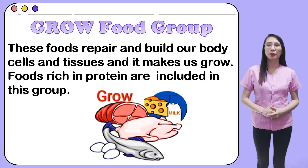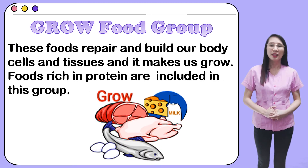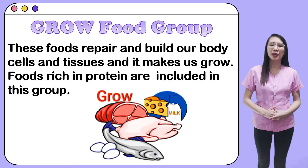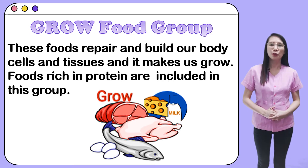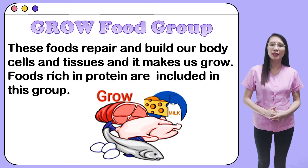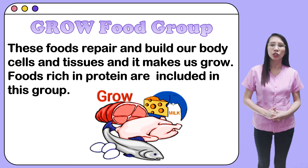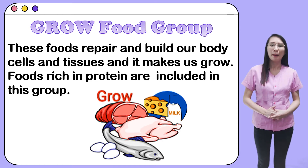The second food group is the GROW Foods. These foods repair and build our body cells and tissues and make us grow. Foods rich in protein are included in this group. Some examples are poultry foods, meat, meat products, eggs, milk products, fish, shrimps, crabs, mongo beans, gelatine, soybeans, peanuts, and cereals like rice and corn.